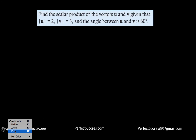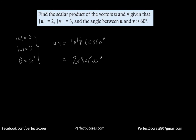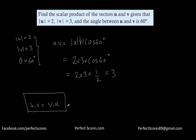Let's solve an example. Find the scalar product of two vectors given that the magnitude of u is 2, the magnitude of v is 3, and the angle between them is 60 degrees. The dot product equals |u|·|v|·cos(60) = 2 × 3 × (1/2) = 3. Also note that u·v equals v·u — this holds true all the time, which you can verify with examples.